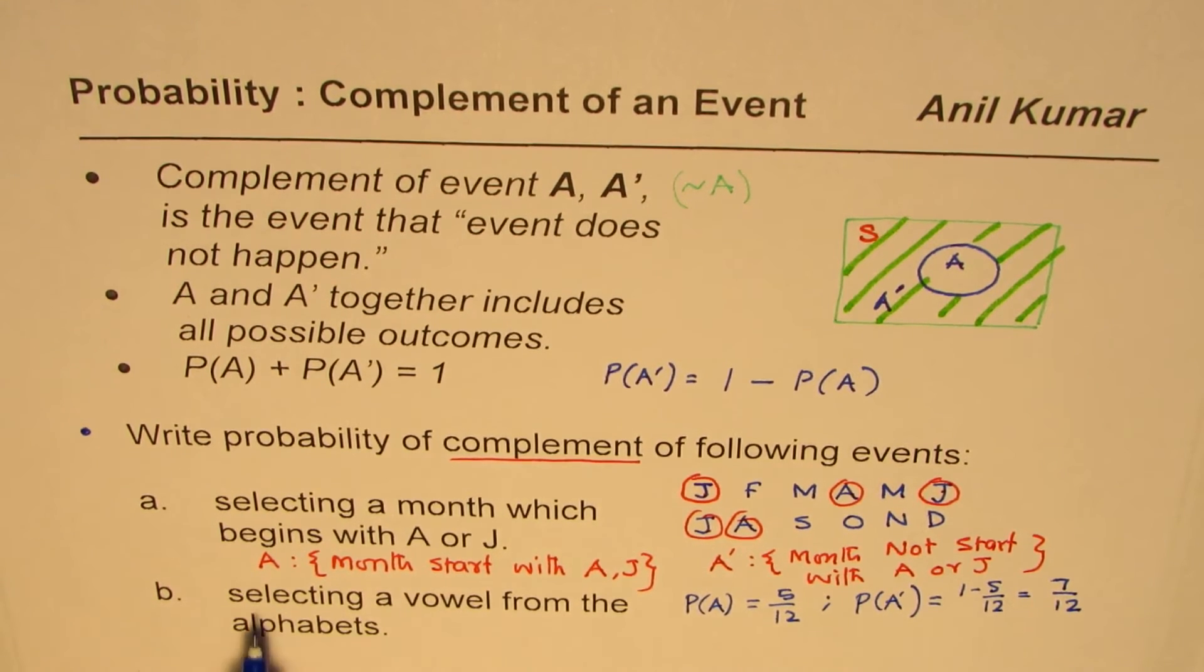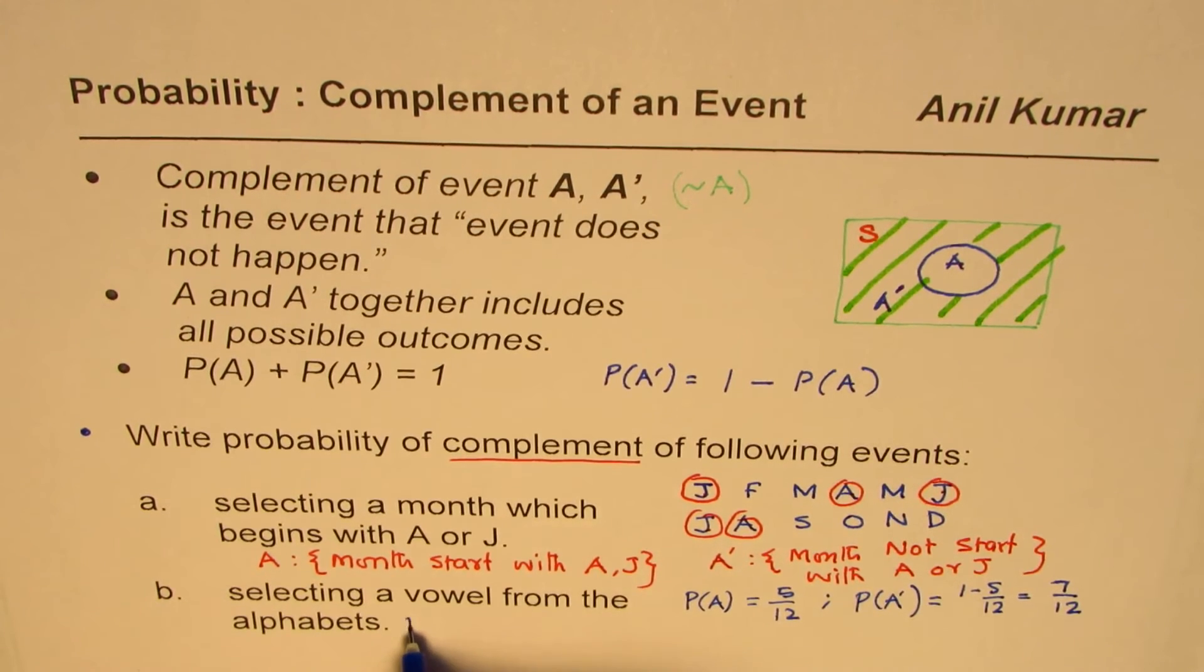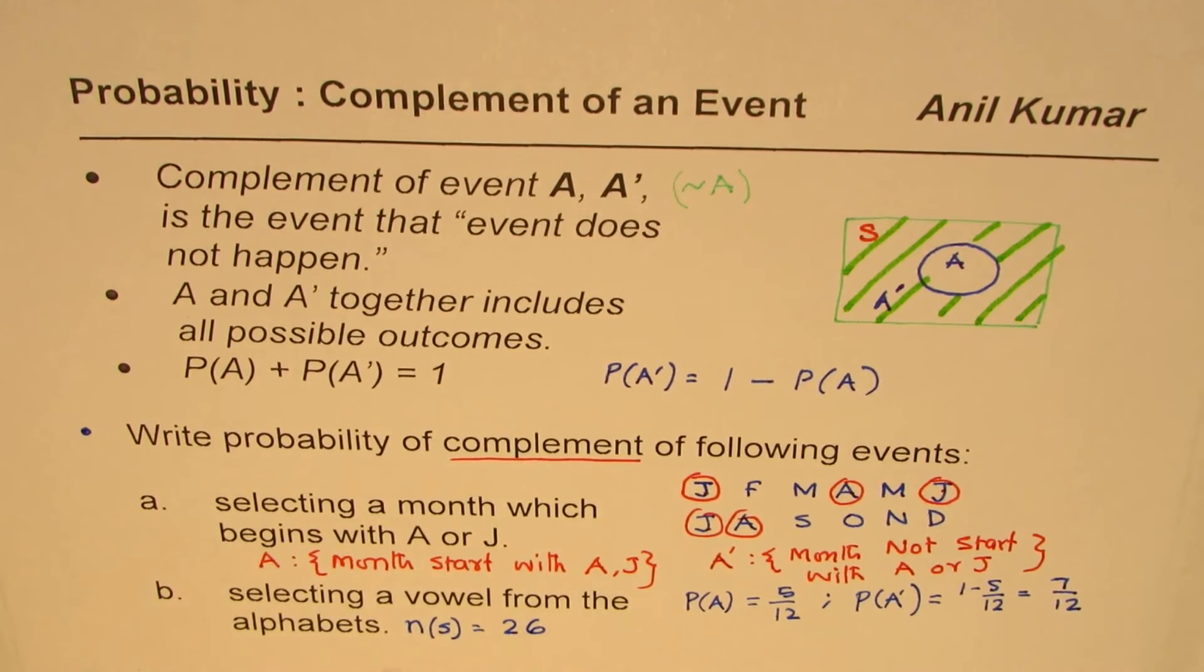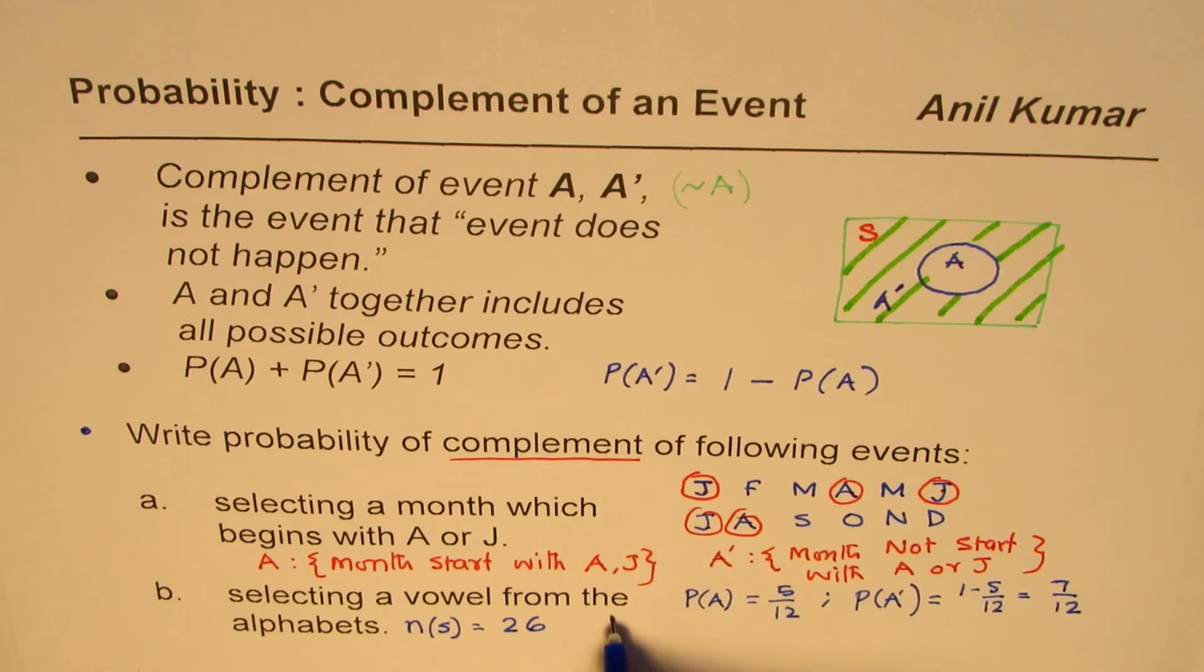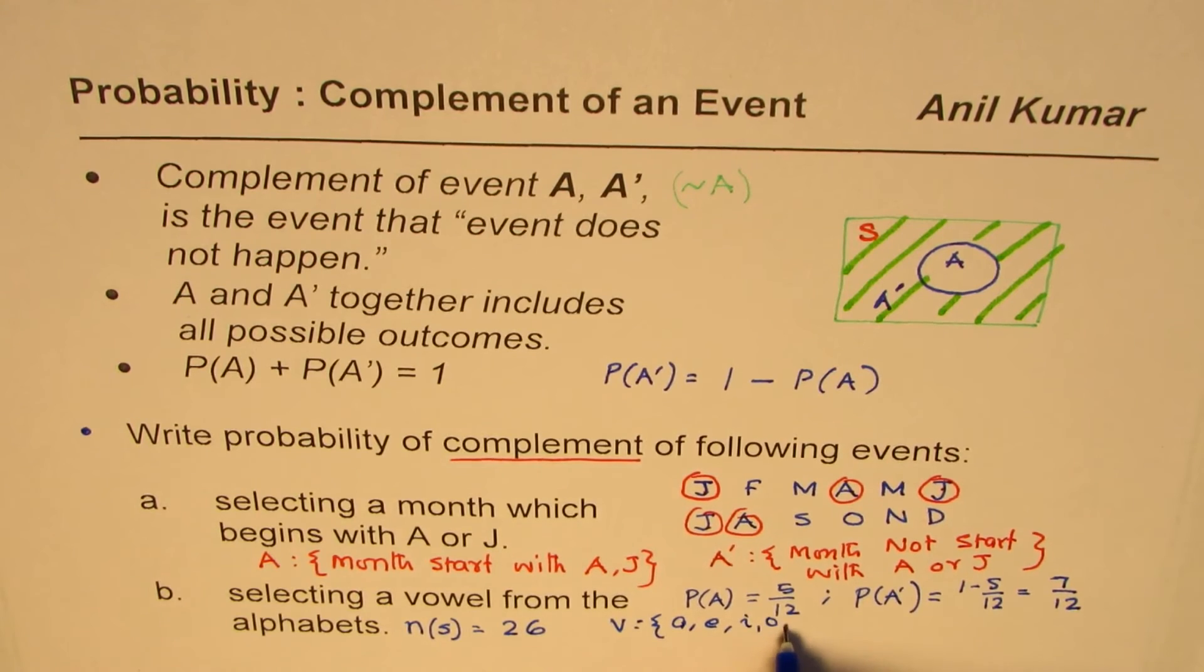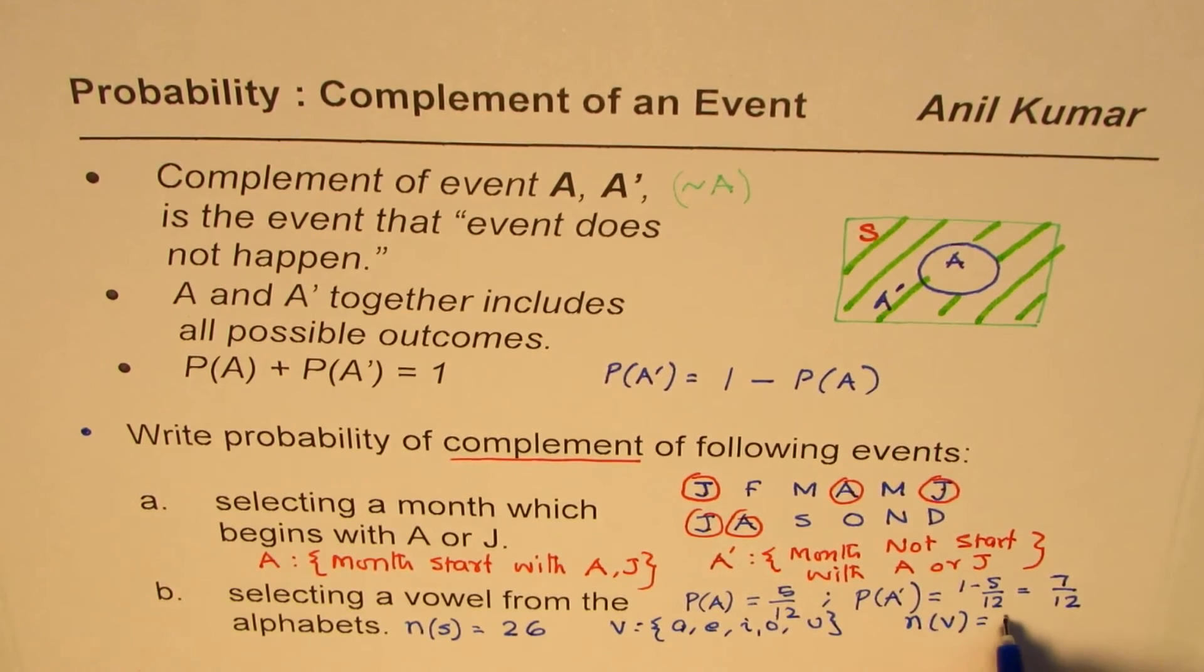Now let's take up the next one which is selecting a vowel from the alphabets. Now as you know total number in a sample space is 26 letters. So there are 26 letters. What are vowels? So if I say vowels are V is set with A, E, I, O and U. So this number of vowels which we have is 5.